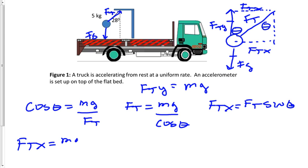So we'll say mg divided by cosine of theta, multiplied by the sine of theta. So then force tension x is going to equal mg times the tangent of theta.